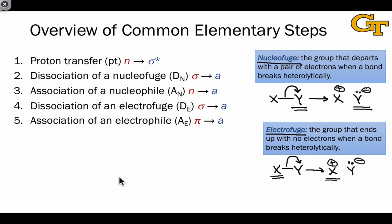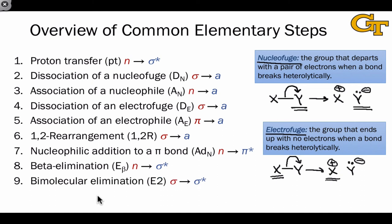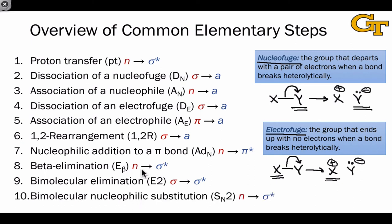We then have association of an electrophile to a pi bond, which is a pi-to-A type interaction. Then 1,2-rearrangement, or 1,2-R, which is sigma-to-A. Nucleophilic addition to a pi bond, A-D-sub-N, is always an N-to-pi-star type interaction. Beta elimination is always an N-to-sigma-star interaction occurring intramolecularly. Bimolecular elimination involves a sigma-to-sigma-star interaction as well as an N-to-sigma-star proton transfer type interaction. And finally, bimolecular nucleophilic substitution, or SN2, always involves an N-to-sigma-star interaction. It differs from proton transfer in that it involves transfer of a heavy atom or group rather than a proton.